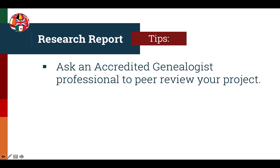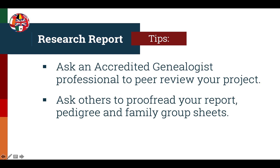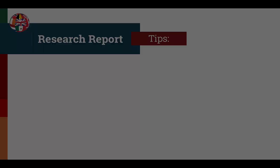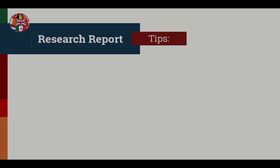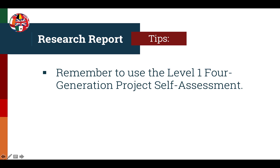Here are some tips to help prepare a top quality Level 1 project. It's a good idea to ask an accredited genealogist professional or someone else working on their accreditation to peer review your project, as peers can help spot methodology or writing problems. An applicant will learn a tremendous amount from having their work reviewed and by reviewing the work of others. Ask friends or family to proofread your report, pedigree chart, and family group sheets for grammar problems or items that don't make sense. Remember to use the Level 1 Four Generation Project Self-Assessment found in the Guide to Accreditation or on the ICAPGEN website to check your project before submitting.